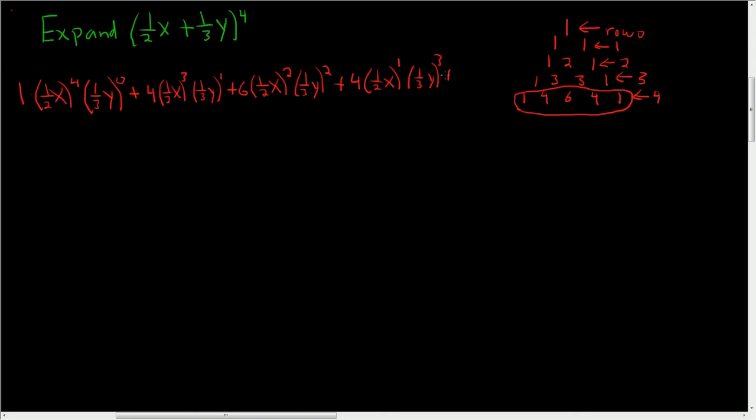And the last one is plus 1. 1 half x to the 0. And then 1 third y to the 4th. Wow, that's really small. Okay, so let's write it up. Let's clean this up.